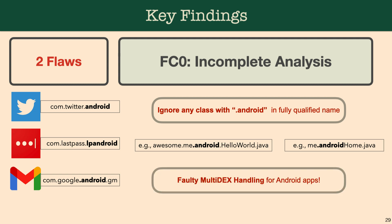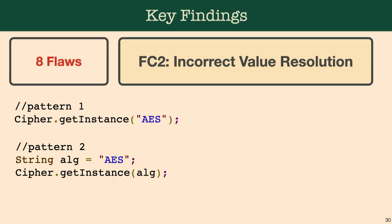In addition to that, we also found some cryptodetectors with faulty multi-dex handling — they were not scanning all the dex files in an Android binary file. I want to talk about three specific flaw classes that we found with the help of MASK.